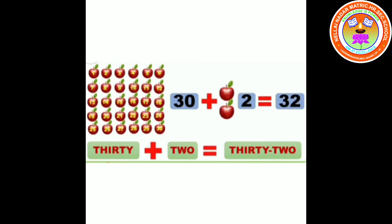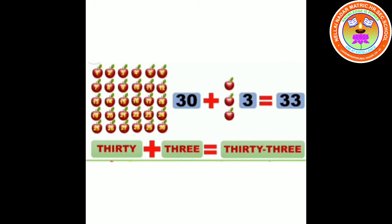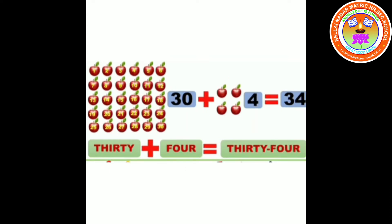33. 30 plus 3 equals 33. T-H-I-R-T-Y, thirty. T-H-R-E-E, three. Thirty-three.